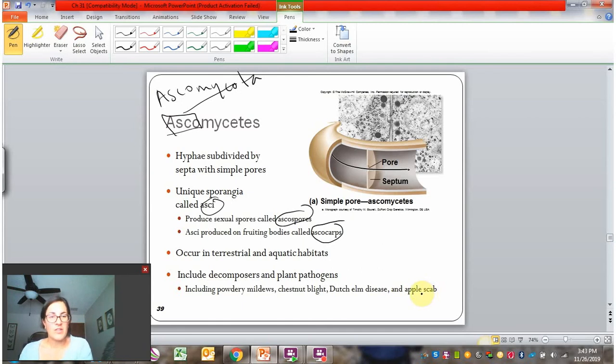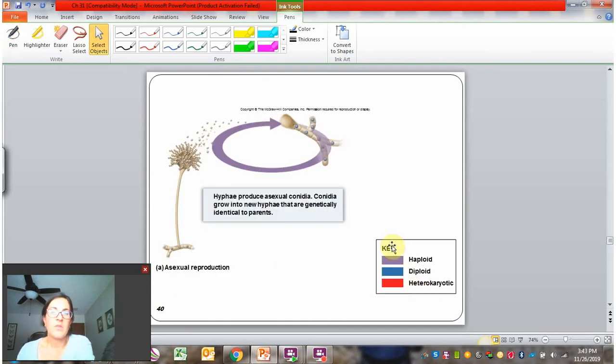But first, let's take a look at their life cycle. So they can asexually reproduce. Like other fungi, they can simply use mitosis to grow a structure and drop spores. These are conidia or conidia spores when they're produced asexually. There's no fusion, no diploid stage. They're always haploid, and the offspring are identical to the parent.